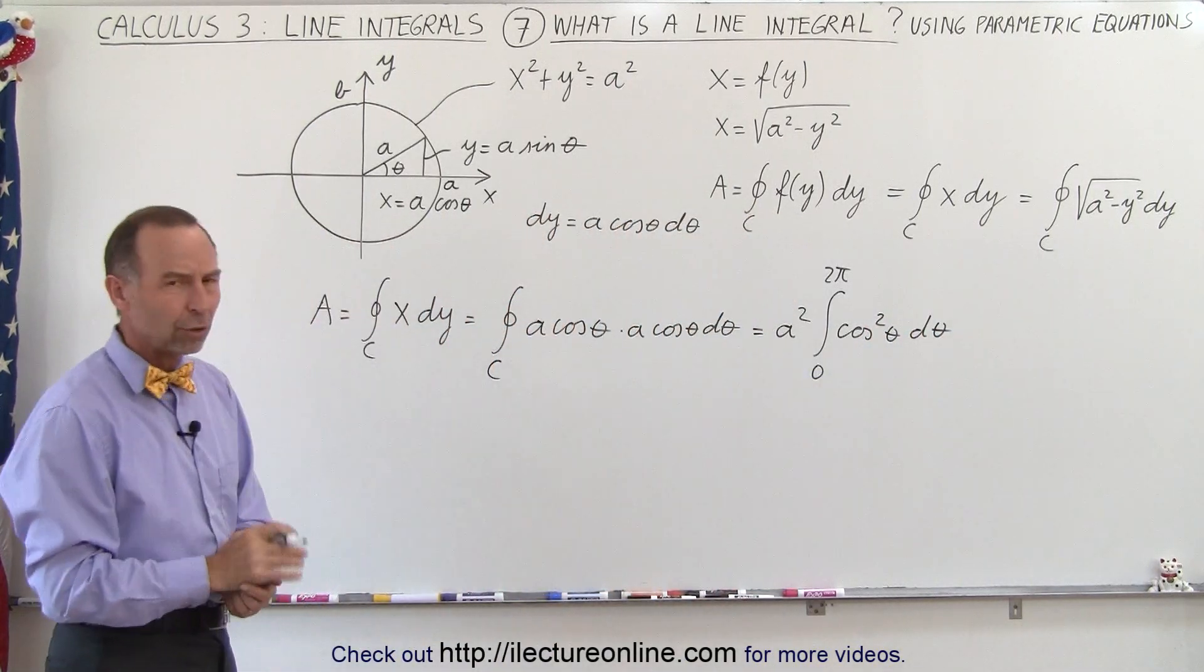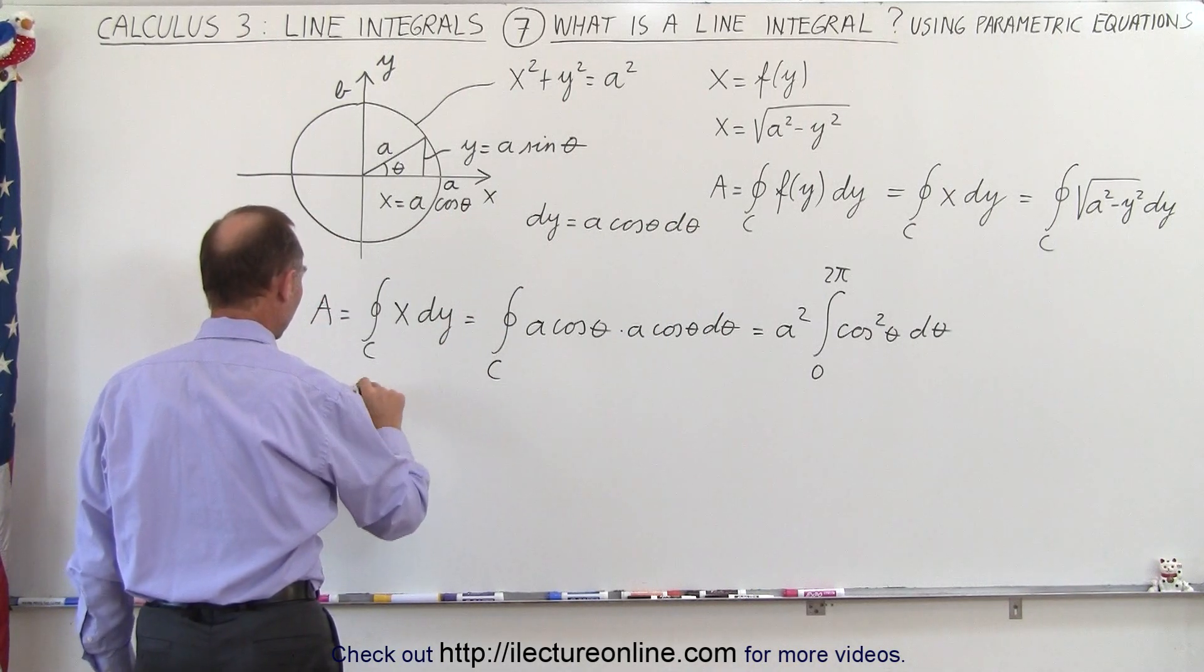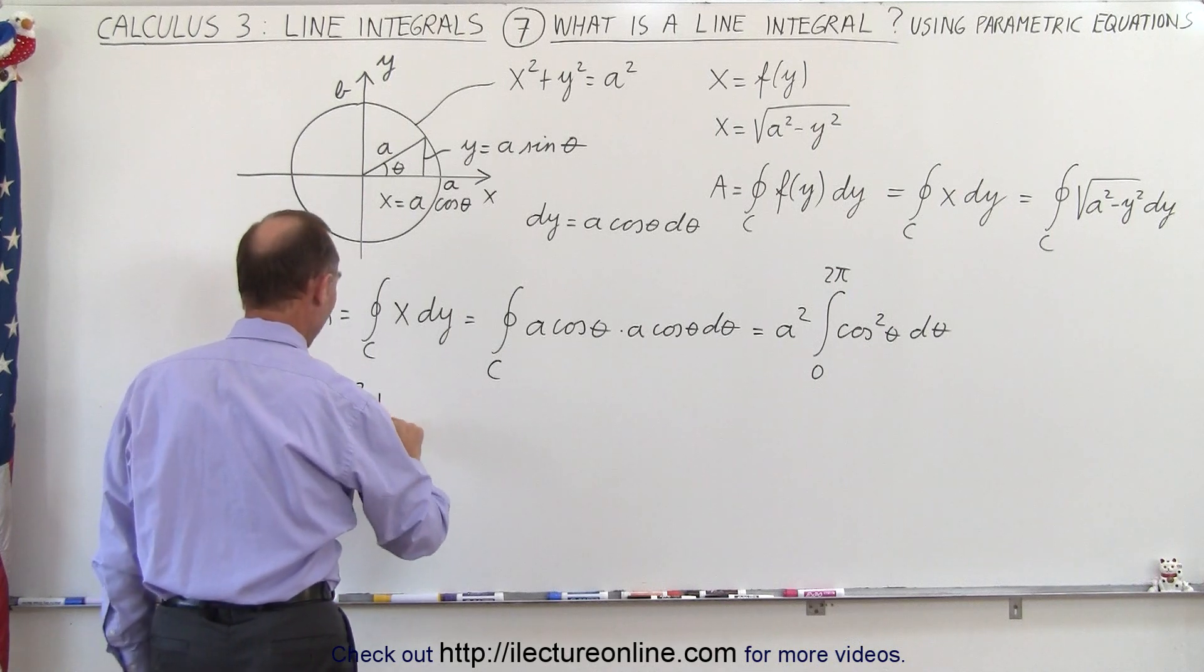So now we have to replace the cosine square of theta by a good identity. So that would be a squared, so this is a squared, times 1 half.